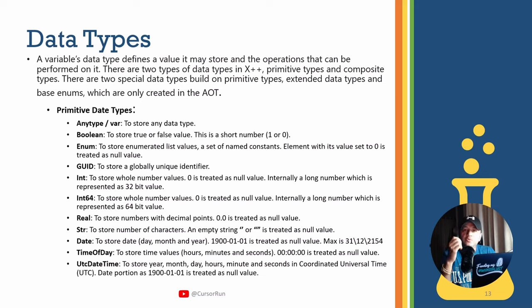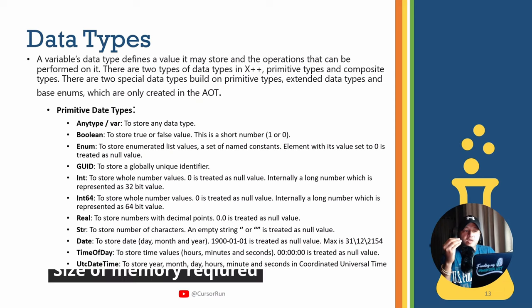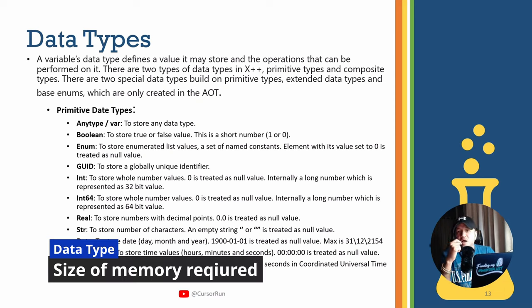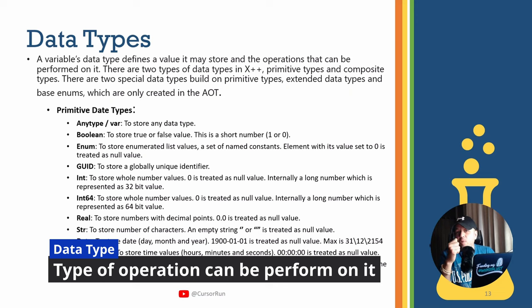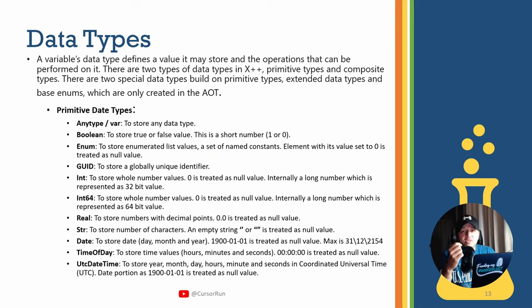A variable's data type defines the value it may store and the operations that can be performed on it. Variable values can be a string, like a name - Rahul Sharma - or an integer number, like 20 years. When you are programming, you need to tell the system what kind of value you are going to store in the variable, and you do this by defining a variable with a data type.